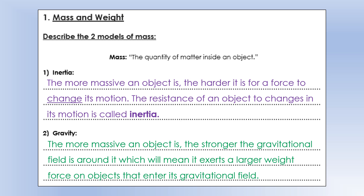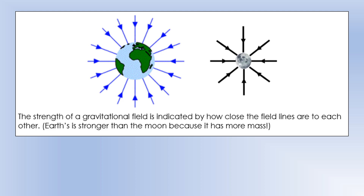We draw gravitational fields around objects to show which direction a mass would experience a force. These field diagrams also indicate how strong a field is - how close the lines are together tells you how strong the field is. For the Earth, the field lines are close together, indicating its gravitational field is stronger than that of the Moon, because the Earth is much more massive.